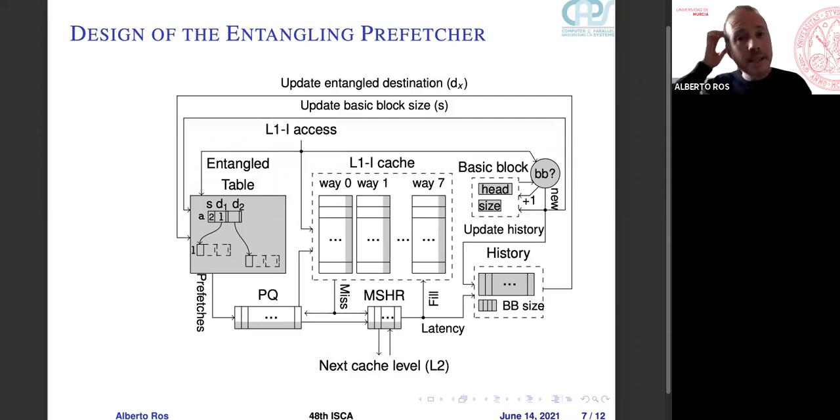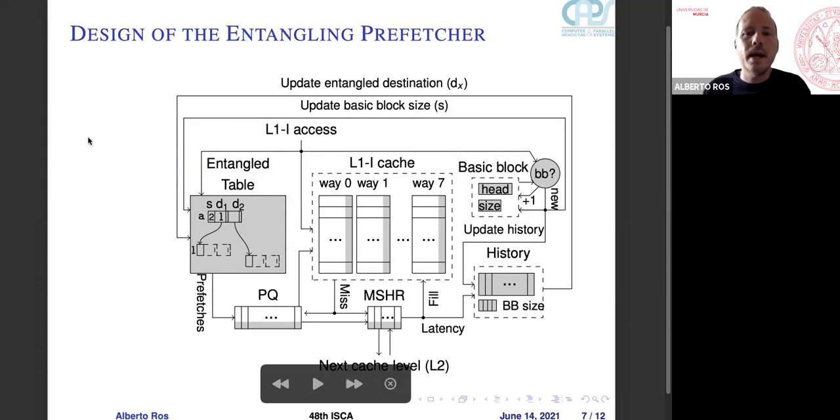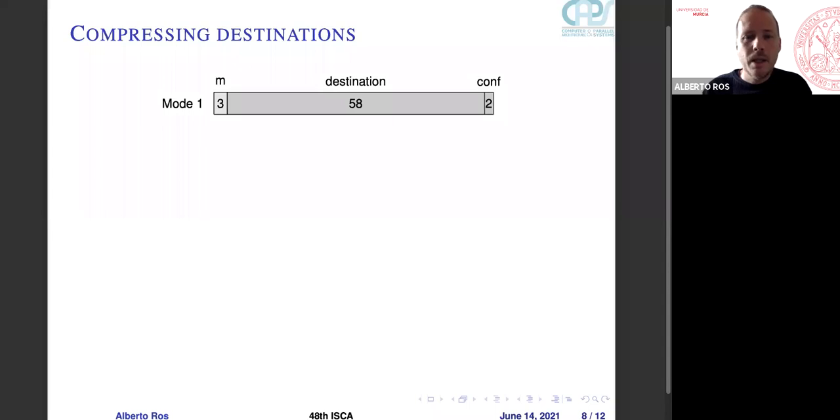Finally, this is the design of the entangling prefetcher, and as I mentioned, the gray areas are the ones that we add.